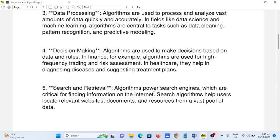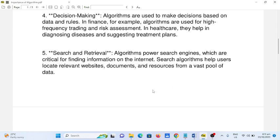Number four, decision making. Algorithms are used to make decisions based on data and rules. In finance, for example, algorithms are used for high-frequency trading and risk assessment. In healthcare, they help in diagnosing diseases and suggesting treatment plans.